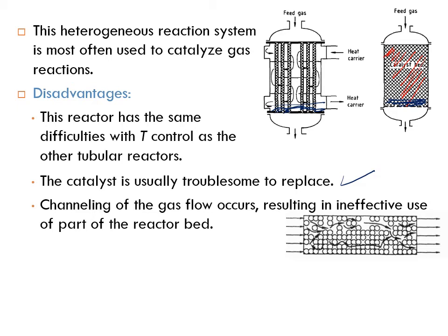When packing is not perfect, some areas are less densely packed. Fluid flow follows the path of least resistance, so part of the flow goes quickly through the reactor without good contact with the catalyst. This means the reactor is not used effectively, with much of the flow bypassing proper catalyst contact.